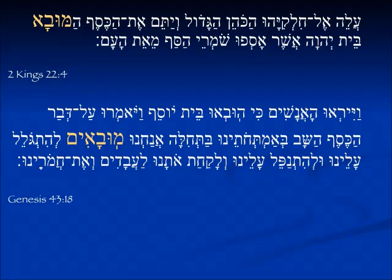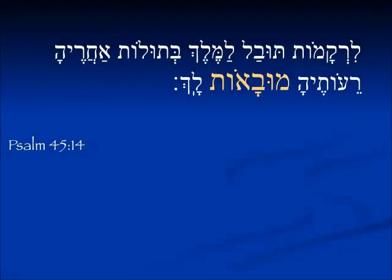In a plural feminine form from Psalm 45, talking about the wedding of the king, here's the bride and her girlfriends are being brought also. Re'oteha — her girlfriends — muvahot, they are being brought, lach, apparently to the king.